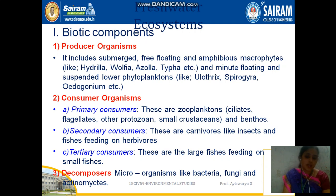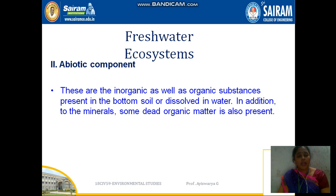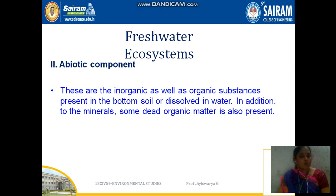Tertiary consumers in the freshwater ecosystem are large fishes feeding on small fishes. Decomposers include bacteria and fungi. The abiotic component of the freshwater ecosystem consists of inorganic and organic substances, bottom soil in the water, and dissolved dead organic matter also present.